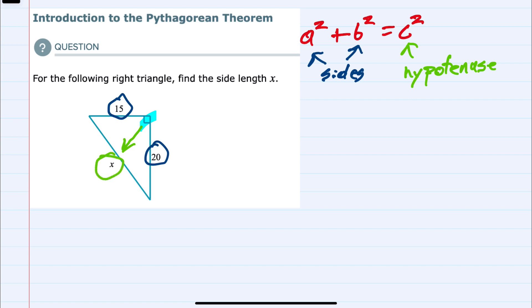Substituting into our equation, knowing that a and b are 15 and 20—it doesn't matter which order—I'll replace a with 15, so a squared is 15 squared, plus b squared is 20 squared.